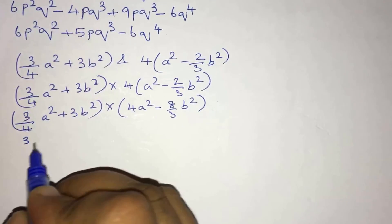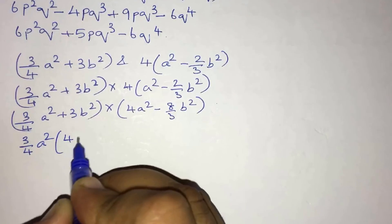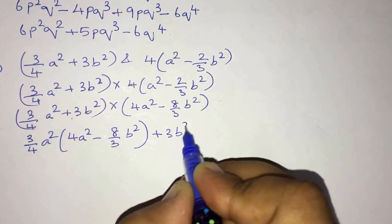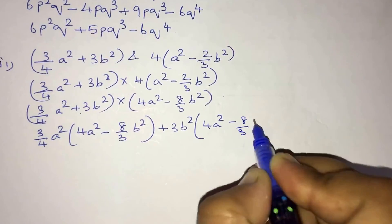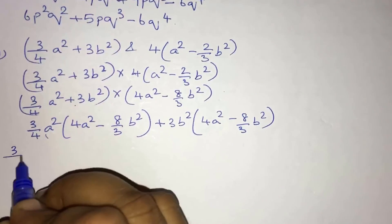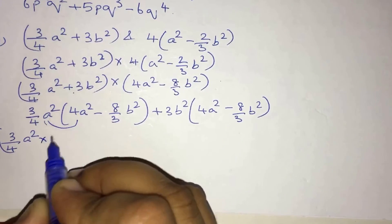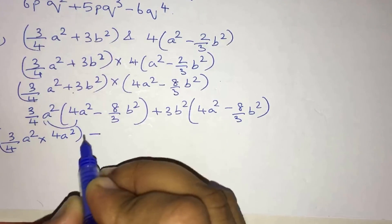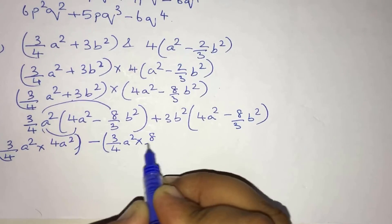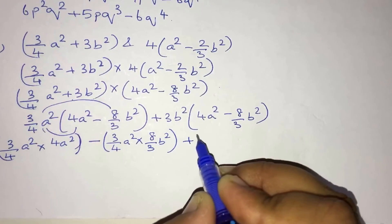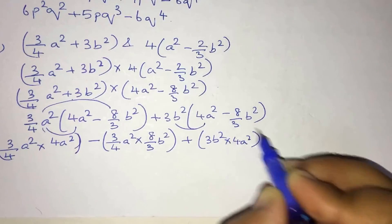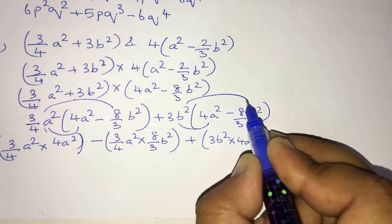Multiplying 3b² into this binomial (4a² - 8/3 b²): 3b² into 4a² gives 12a²b², and 3b² into -8/3 b² gives -8b⁴. Collecting all terms: 3a⁴ - 2a²b² + 12a²b² - 8b⁴.